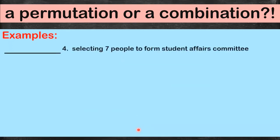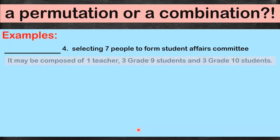Let's have the fourth example: selecting seven people to form a student affairs committee. The committee might include one teacher as advisor and three grade 9 and three grade 10 students chosen randomly. If the selected grade 10 students are A, B, and C, it doesn't matter if C is called first or B is called last — it's still the same group. The order does not matter, so this is a combination.